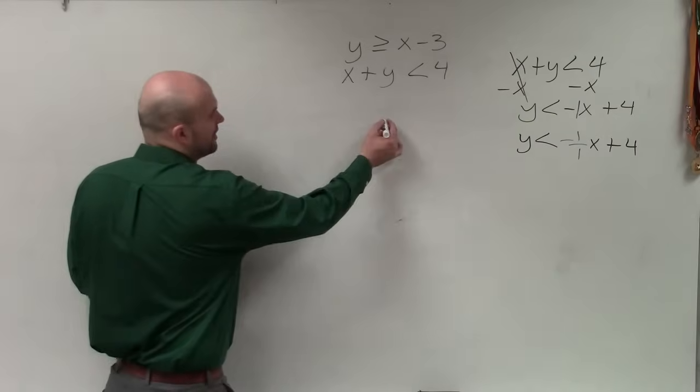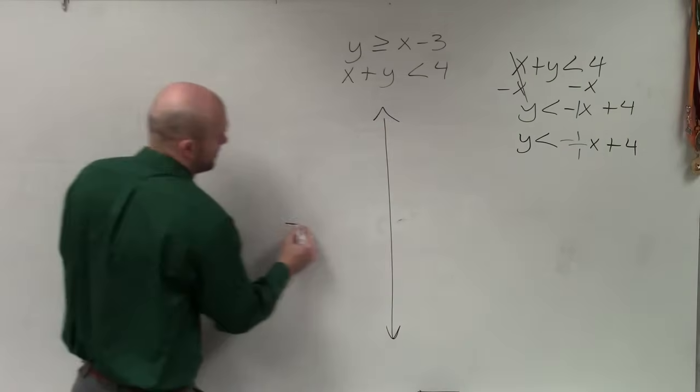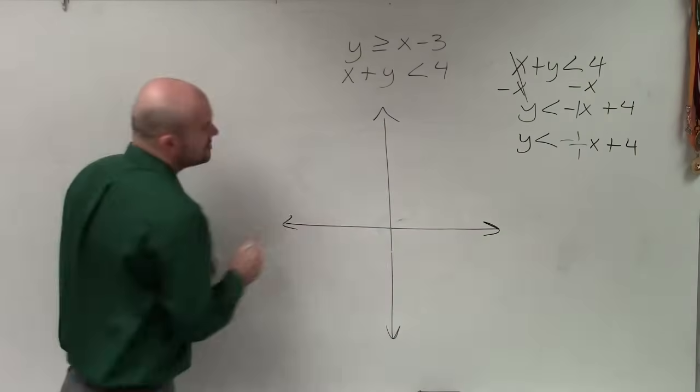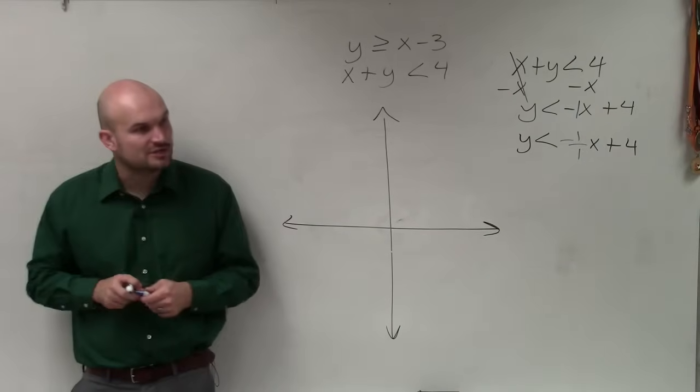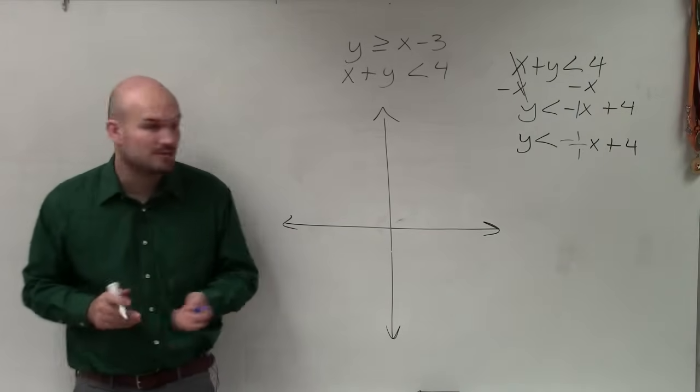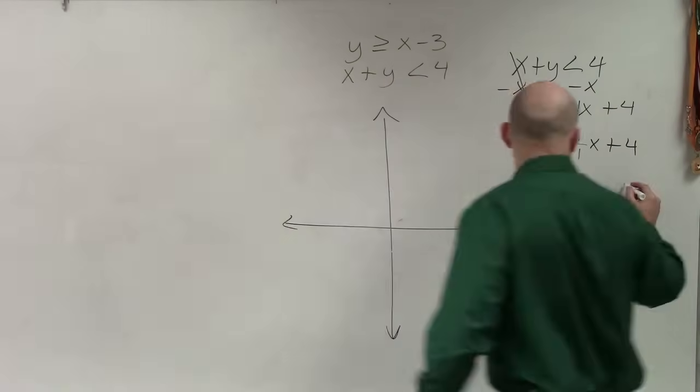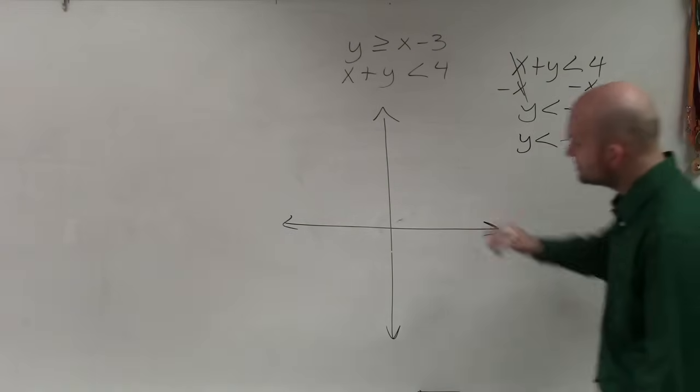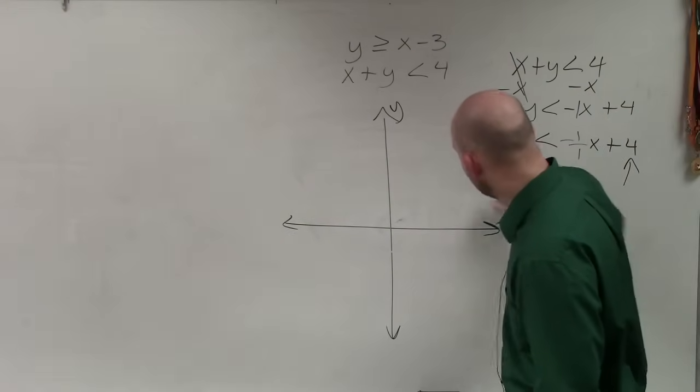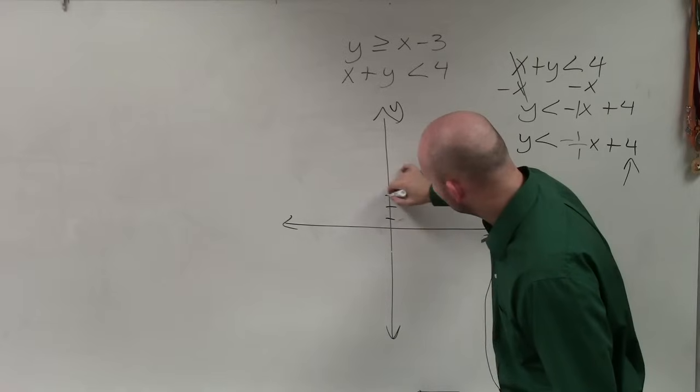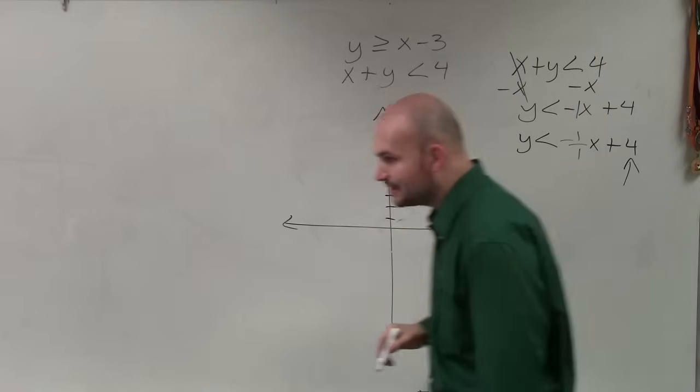So now, let's go ahead and graph it. So the first thing we do is plot the y-intercept, because I think that's the easiest thing to do. The y-intercept, remember, is going to be your constant. So I go up positive 4 on the y-axis. 1, 2, 3, 4. And I make a nice big dot.